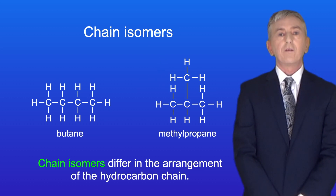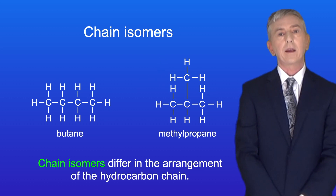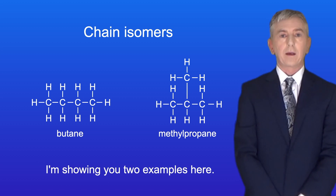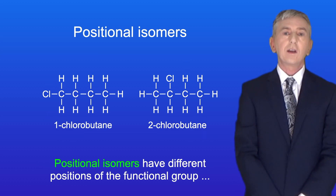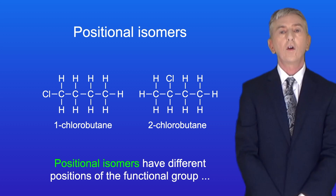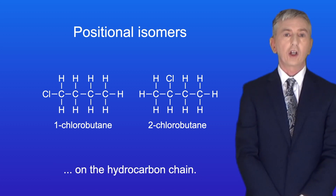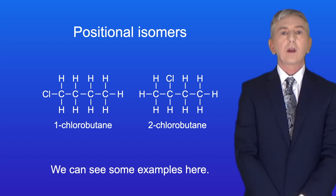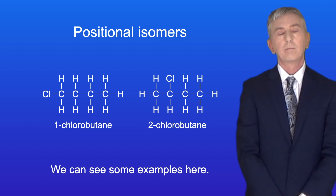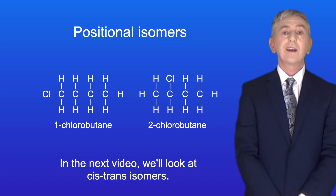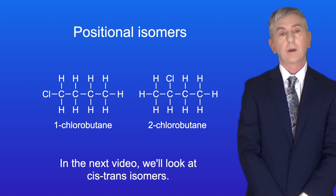Chain isomers differ in the arrangement of the hydrocarbon chain. Positional isomers have different positions of the functional group on the hydrocarbon chain. In the next video we look at cis-trans isomers.